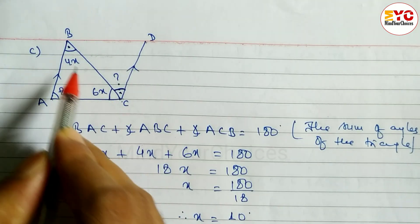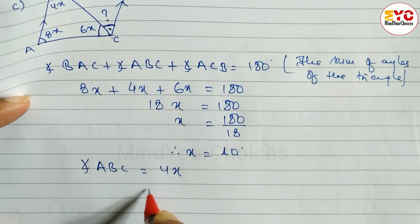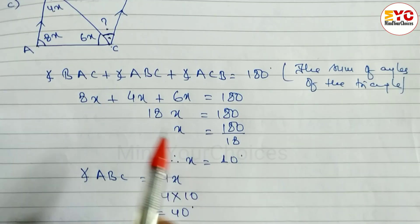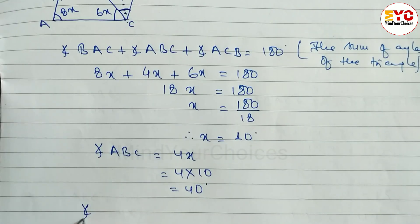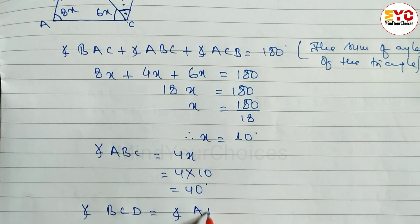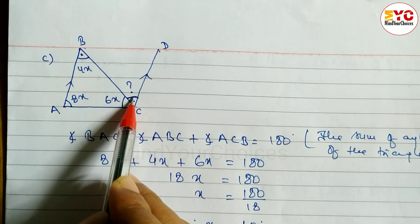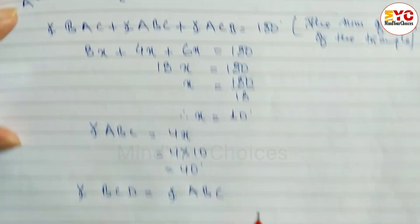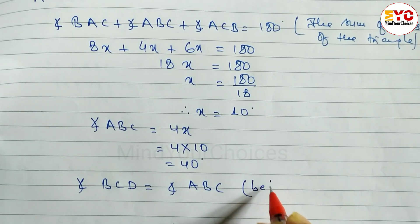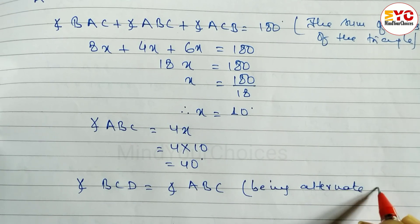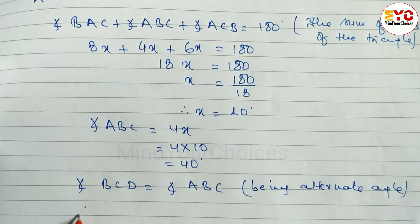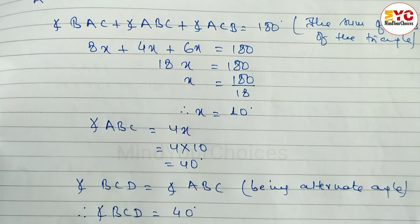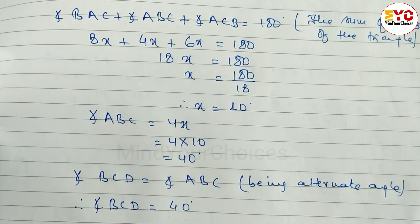Now, angle ABC = 4x = 4 × 10 = 40 degrees. Angle BCD and angle ABC are alternate angles, so they are equal. Therefore, angle BCD = angle ABC = 40 degrees. Hope you understand this video related to geometric triangles.